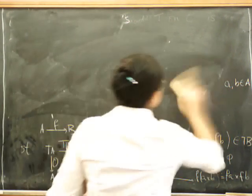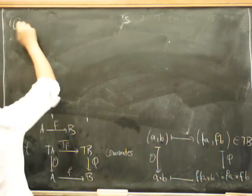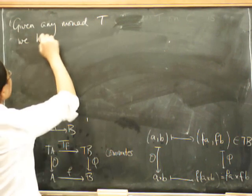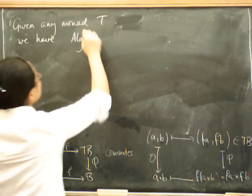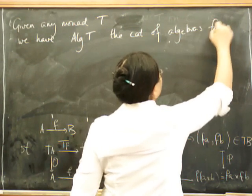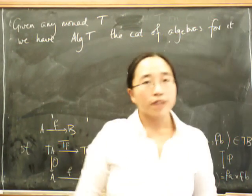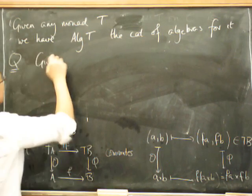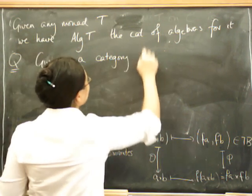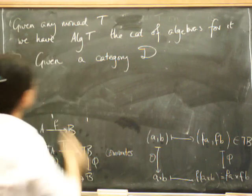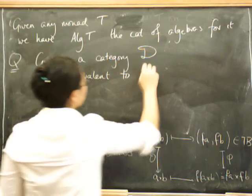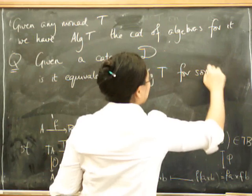What we haven't quite written down properly is the fact that given any monad T, we have alge T, the category of algebras. And so you might say to yourself, here is a question. Given some random category, given a category D, is it equivalent to some category of algebras for something? Is it equivalent to alge T for some T?